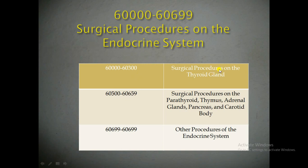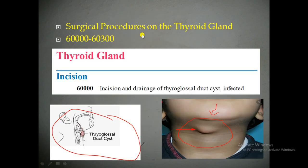Any procedure performed on the thyroid gland we have to bill from 60,000 to 60,300. Similarly, any surgical procedure performed on the parathyroid gland, thymus gland, or adrenal gland — any procedure performed on these glands — we have to bill from 60,500 to 60,699. And if any other procedures on the endocrine system are performed by the physician, we have to bill CPT code 60,699.